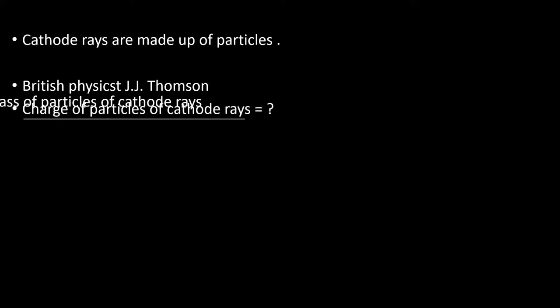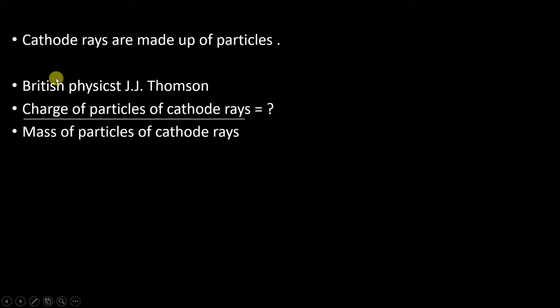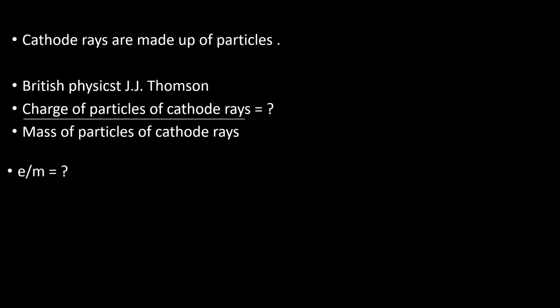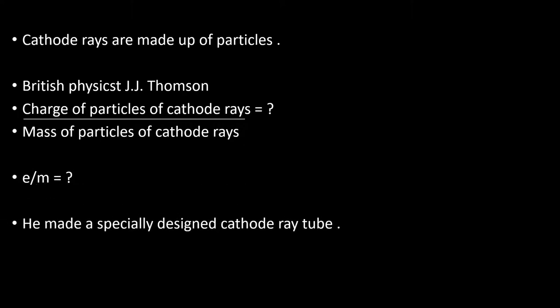On this basis, Sir J.J. Thomson, who was a British physicist, found the ratio of the charge of particles of cathode rays to the mass of those particles — that is, charge divided by mass. To find this value, he created a specially designed cathode ray tube.